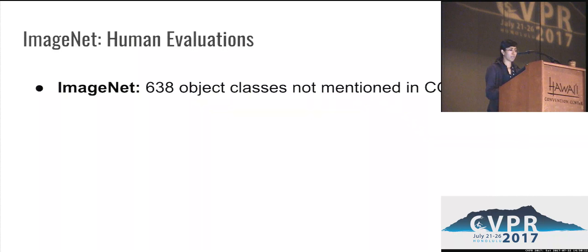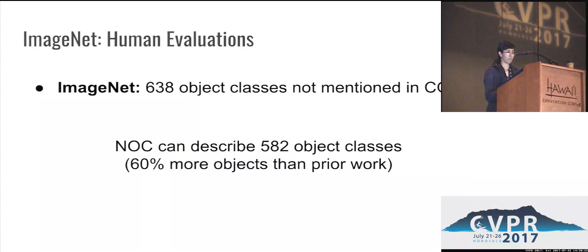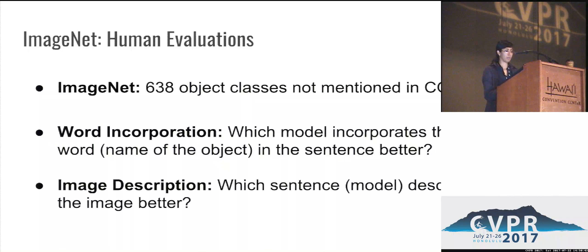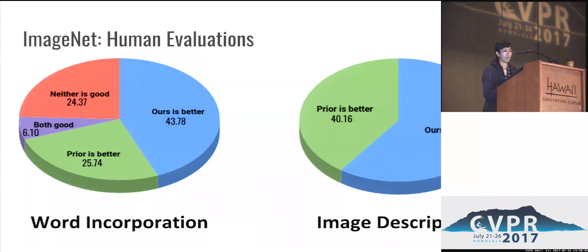We also evaluate our model on ImageNet. Specifically, we select 638 object classes not mentioned in COCO, and our model is able to describe several of these object categories — many more compared to prior work. We ask human Mechanical Turk workers to evaluate our model on two criteria: word incorporation, asking which model better incorporates the name of the object in the sentence description; and image description, asking which model better describes the image. Human raters preferred our model over previous work on both criteria.